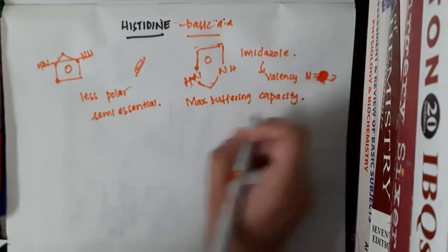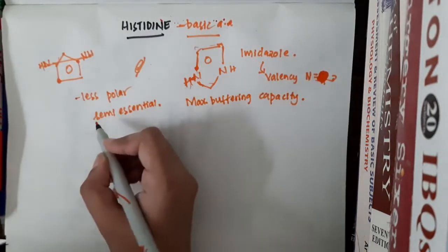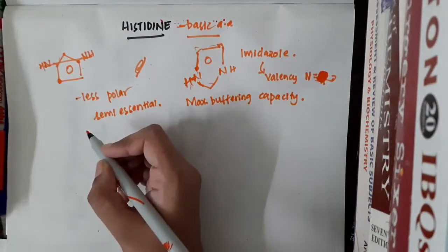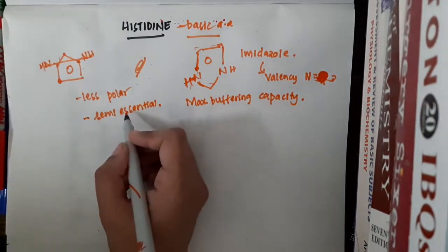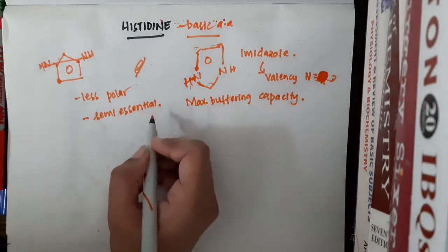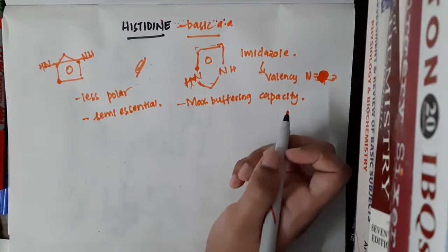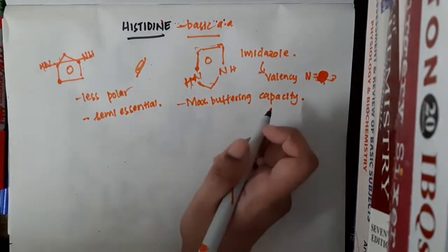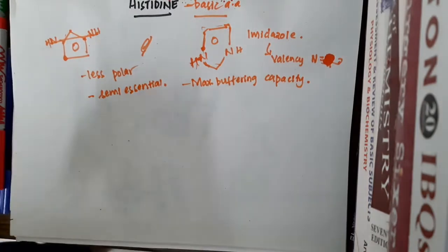Histidine is a semi-essential amino acid and it has maximum buffering capacity. To summarize the one-liners: it is a basic amino acid, less polar amino acid, semi-essential amino acid, and it has maximum buffering capacity.